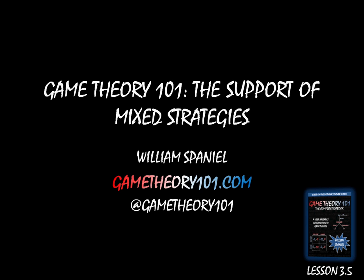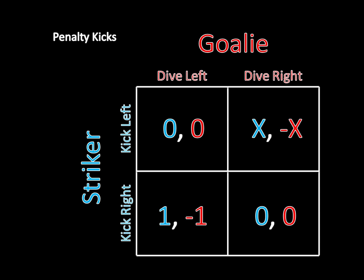So why haven't we done that before? Well, every single game that we've seen with a mixed strategy Nash equilibrium so far has been a two-by-two game. This is the example we've been using for the last couple of videos when talking about comparative statics — the penalty kicks game — and we're very good at using the mixed strategy algorithm to find the mixed strategy Nash equilibrium of these two-by-two games.